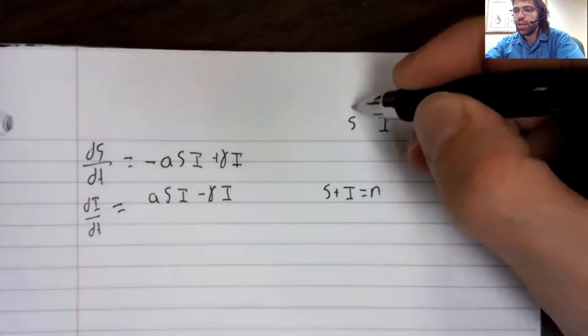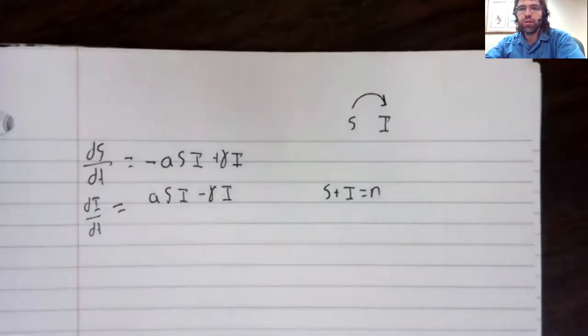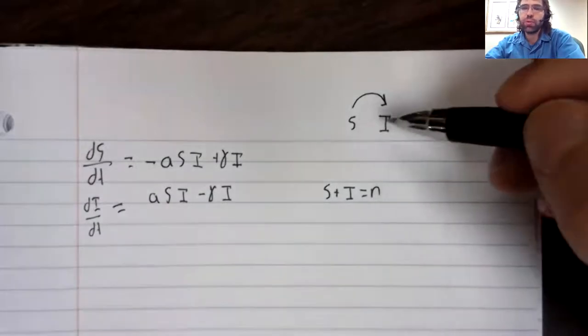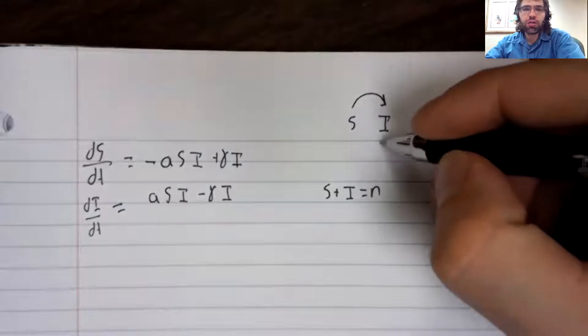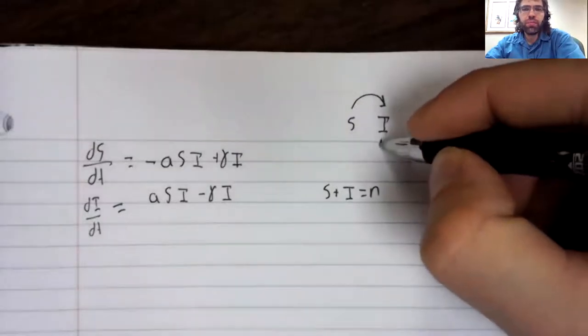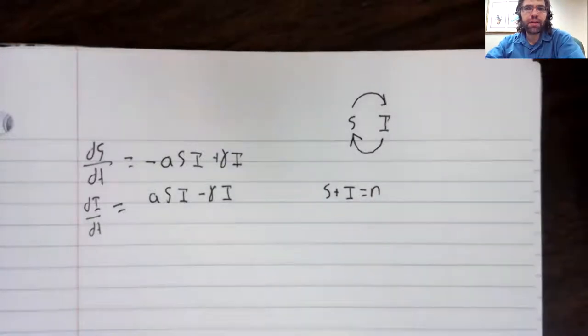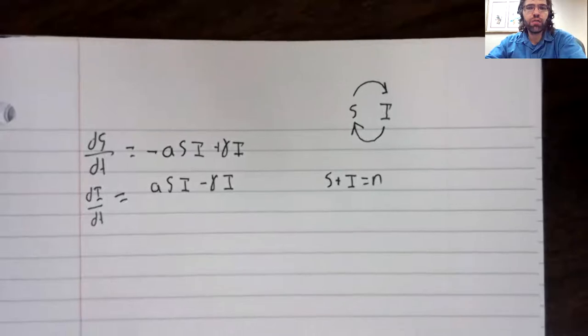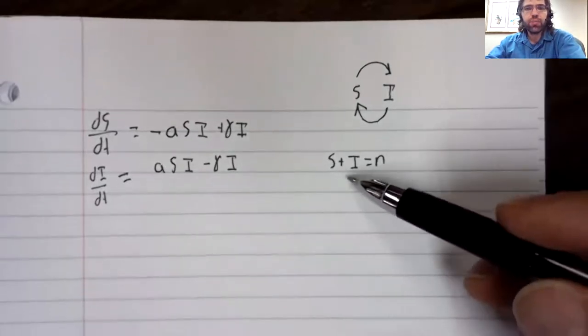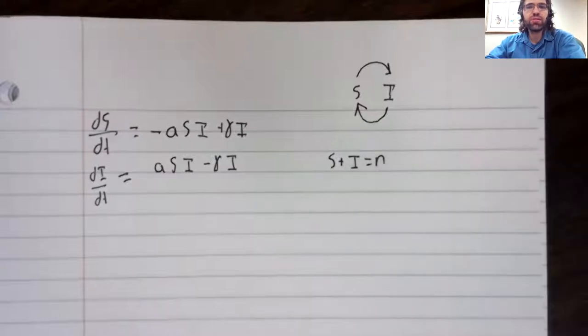People can become sick and go from susceptible into infected. The disease does not grant immunity. So infected people go back to being susceptible after recovery. The population is constant, S plus I equals N.